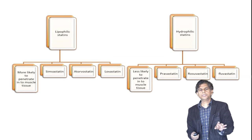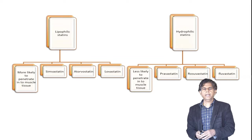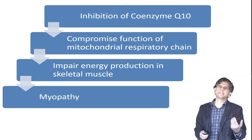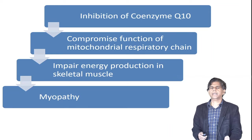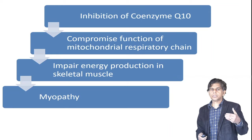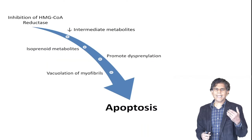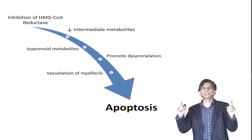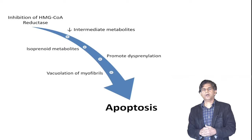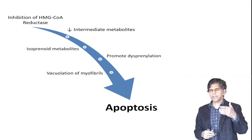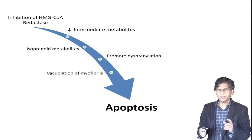Remember that increasing the dose increases muscle side effects. The second pathophysiology mechanism is inhibition of coenzyme Q10, which compromises the mitochondrial respiratory chain, impairs high-energy production in skeletal muscle, and can lead to myopathy. The third mechanism involves inhibition of HMG-CoA reductase, which decreases intermediate metabolites, promotes isoprenoid formation, and can promote apoptosis — cell death of muscle tissue.